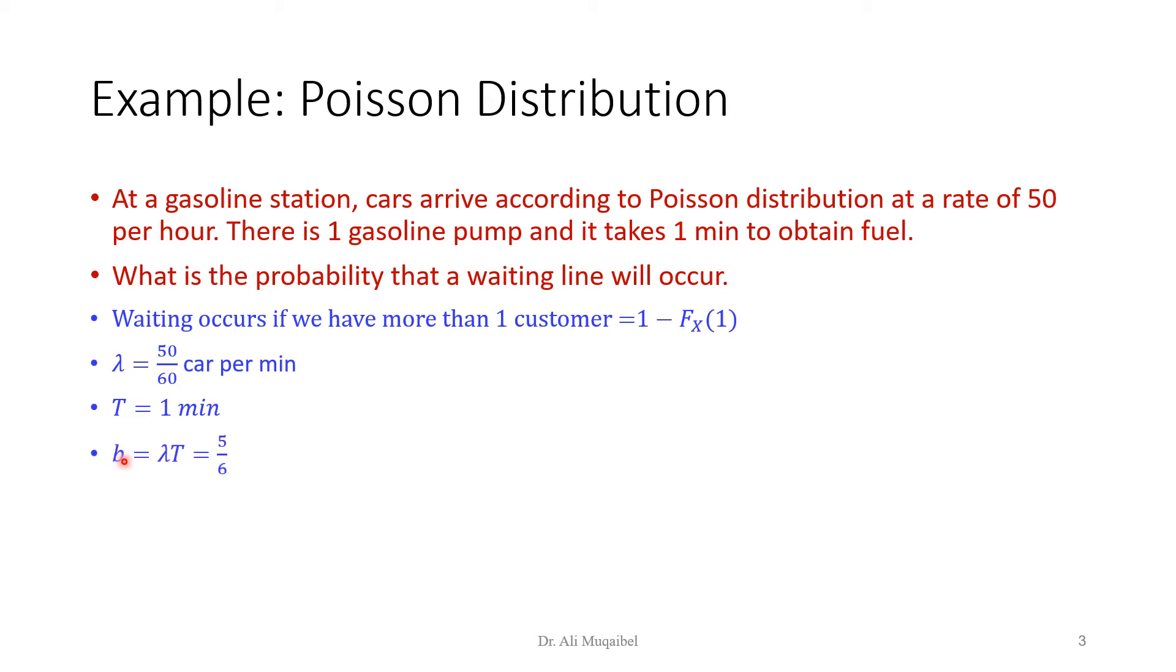We multiply them by each other and we get b, which is 5 over 6. We have the CDF from the previous slide for the Poisson distribution. We can just plug in the number. I get the probability of having 0 or 1, and here is the equation that we have utilized. The answer is 0.2032. The probability of waiting in a line is 20%. If we change the serving time or the number of car arrivals, accordingly we get a different probability.